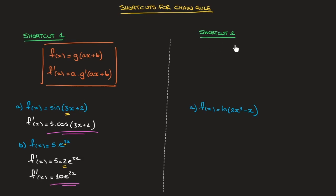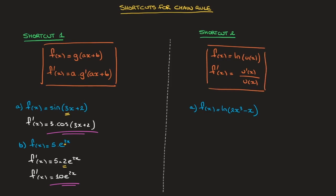The second shortcut I want to show you involves the logarithm function, and it states the following. If a function f of x can be written as ln of u of x, then its derivative f dash of x will always be equal to u dash of x over u of x. And I'll go ahead and box that result. Just as the previous result, this result will often save us lots of time.